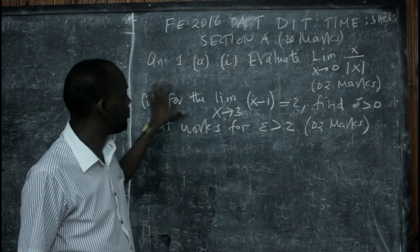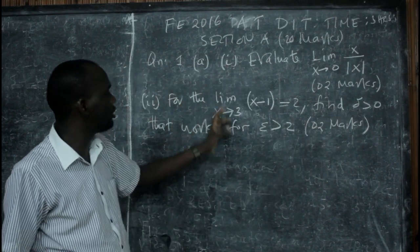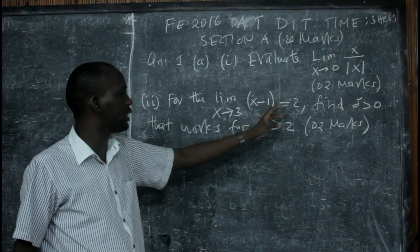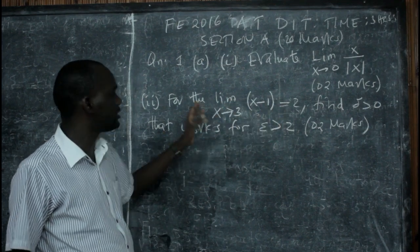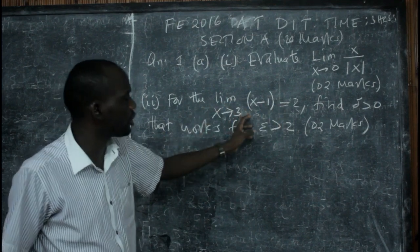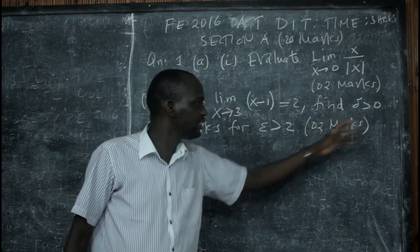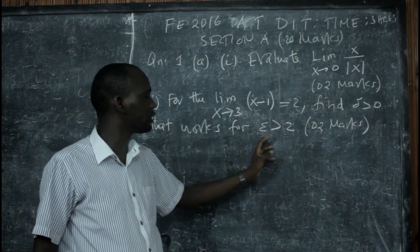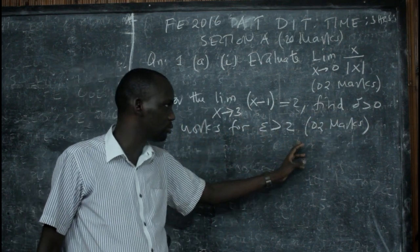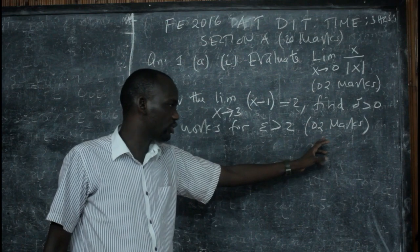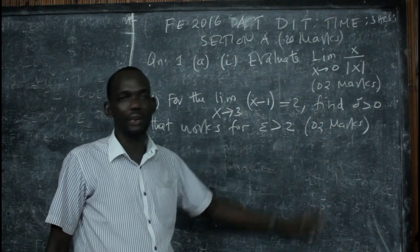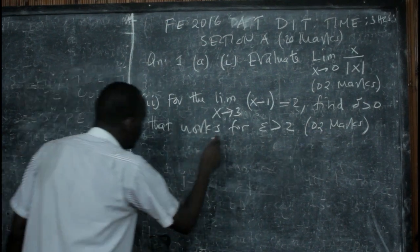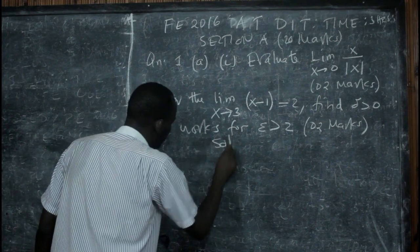The second part is asking about the limit of the function x minus one as x approaches three, which equals two. Find delta greater than zero that works for epsilon greater than zero, and the total marks you can get is two marks. We are going to solve each of these questions.